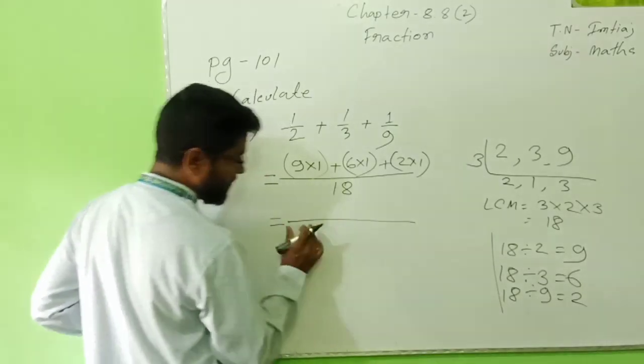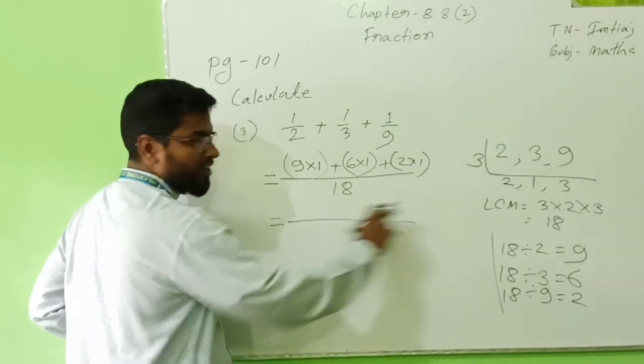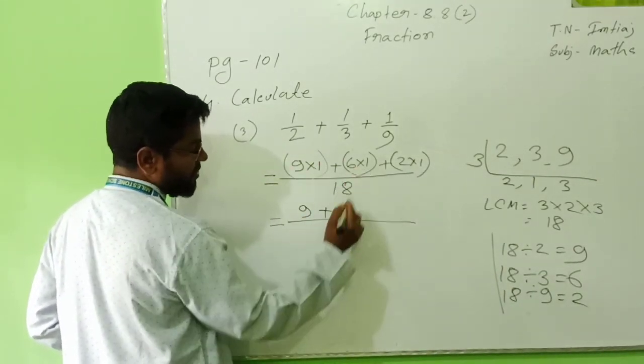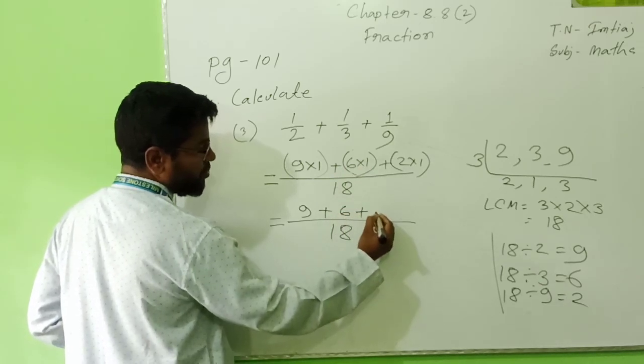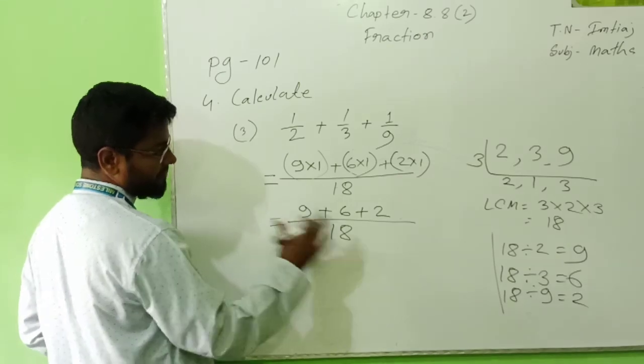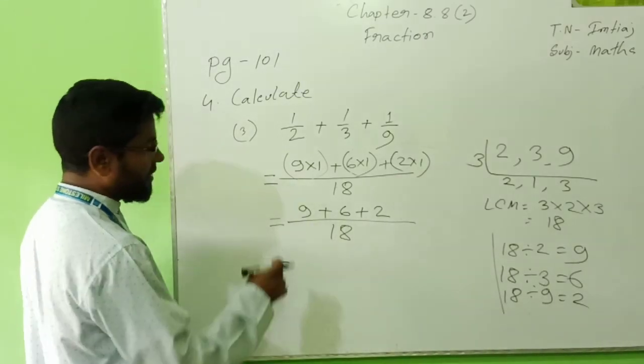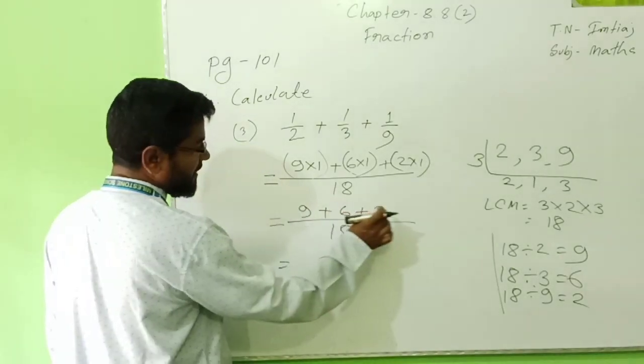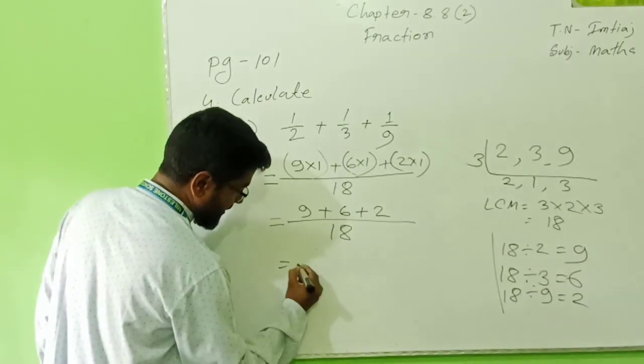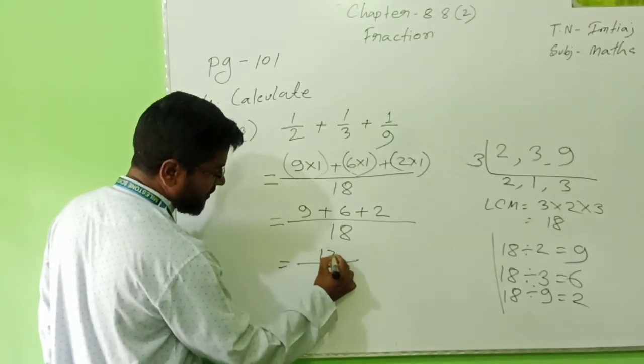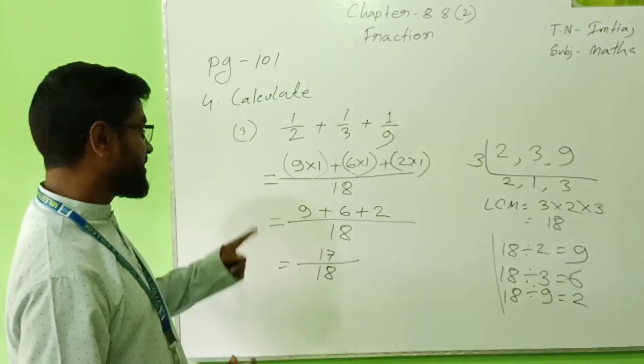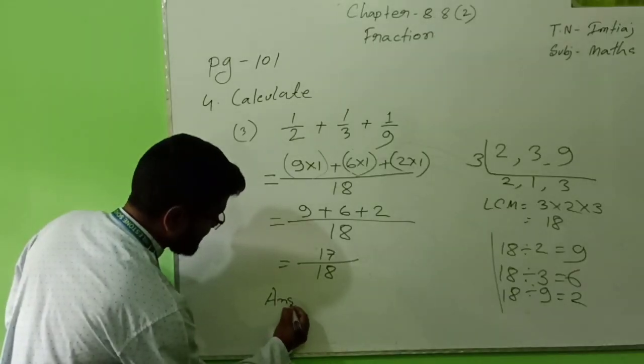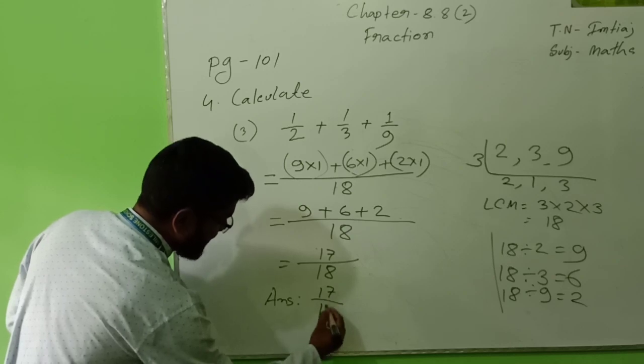Equal sign, then in middle keep a straight line. That 18 I will write first. 1 times 9 is 9, plus 1 times 6 is 6, plus 1 times 2 is 2. That I will add up: 9 and 6 is 15, 15 and 2 is 17. So, fraction bar, in down first, upper only 17. So I can write 17/18. This one is the answer.